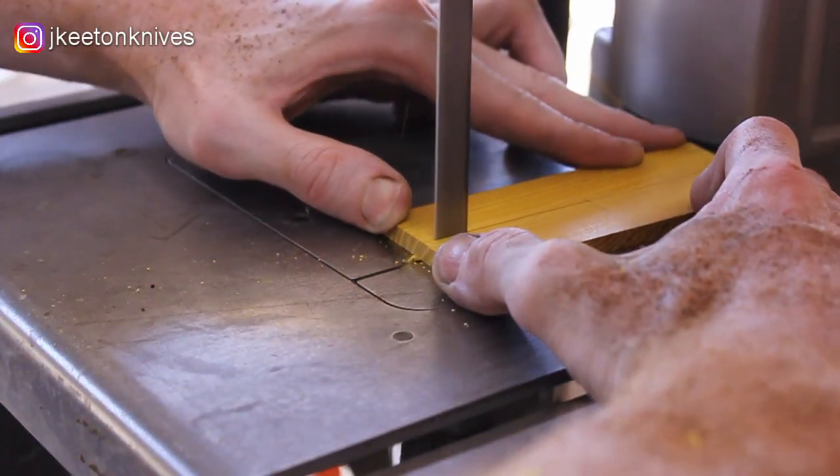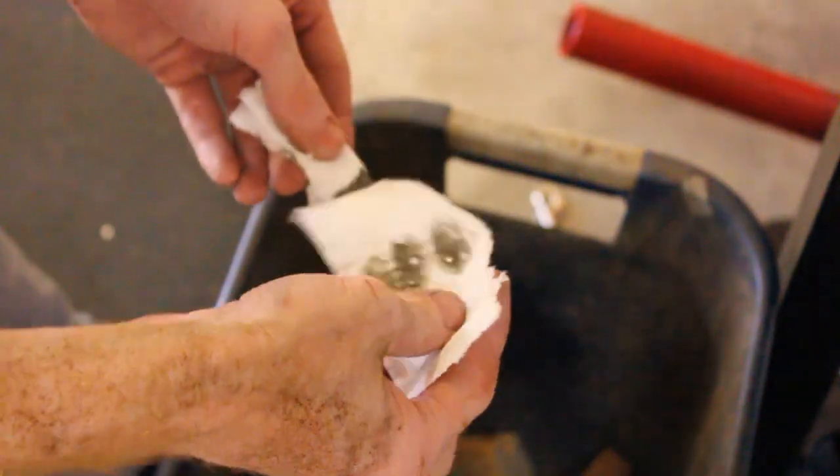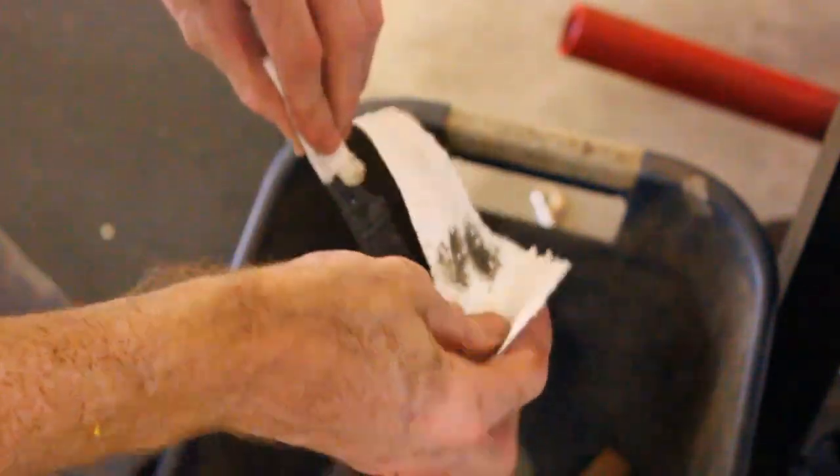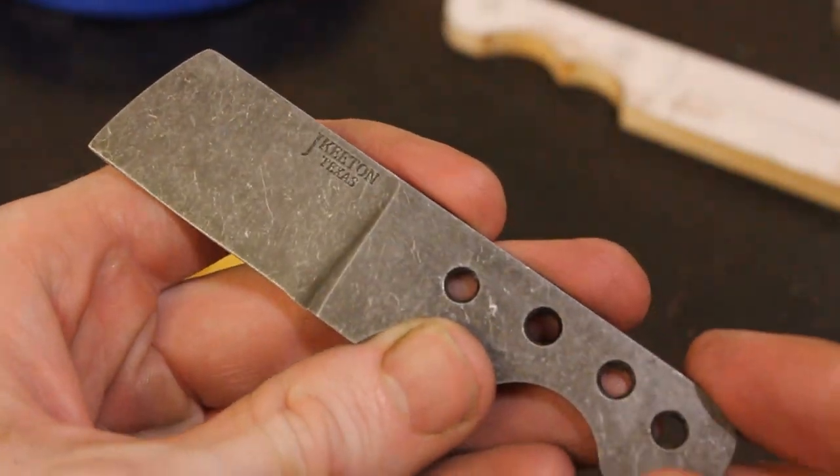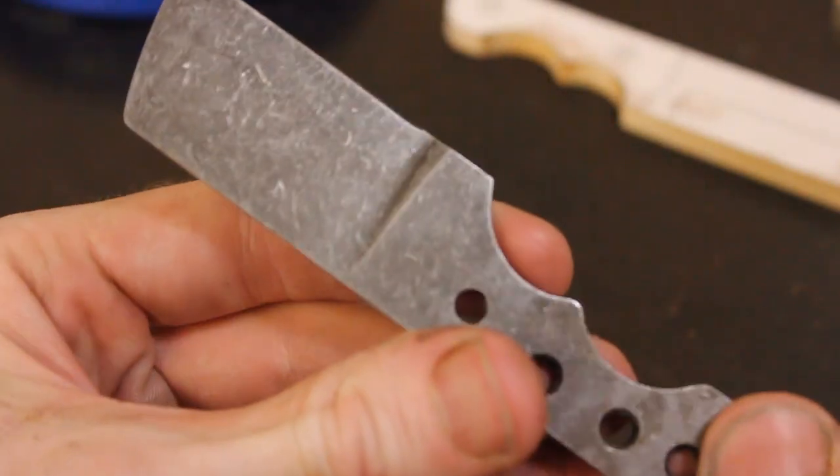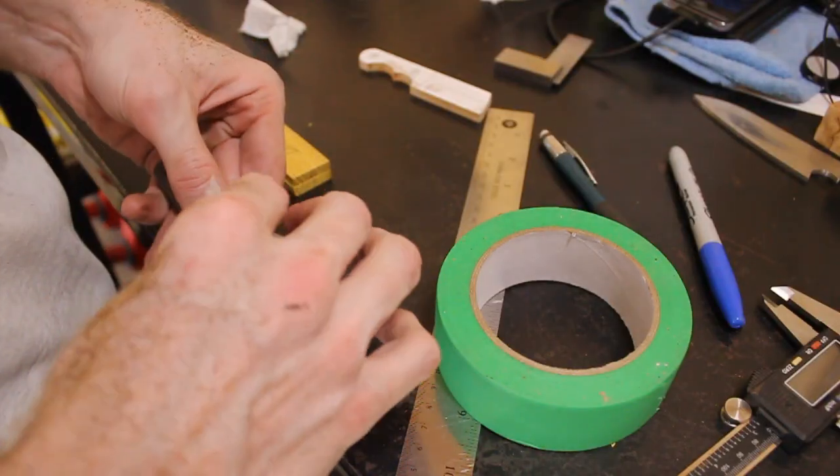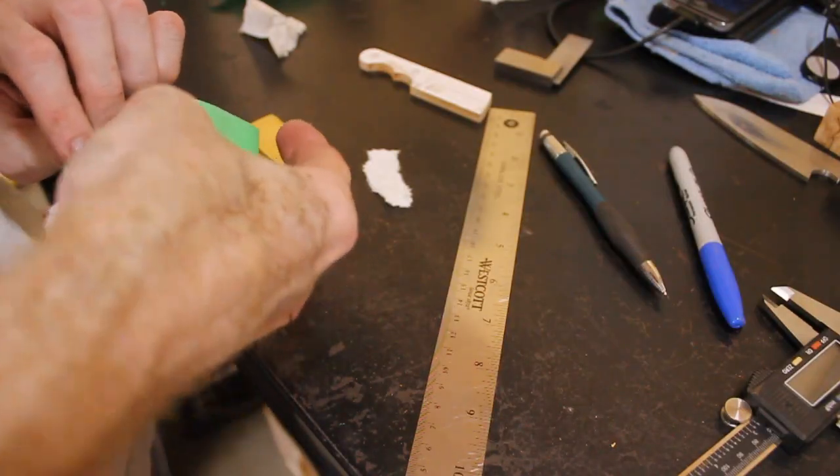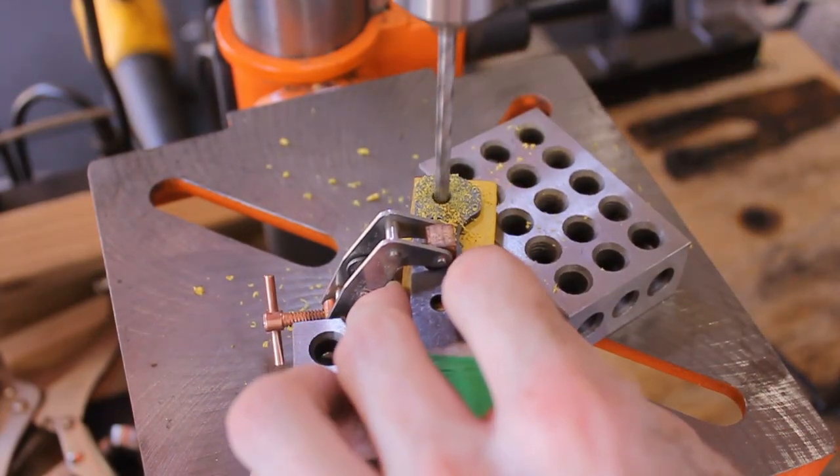The nice thing is with such a small knife, I'll be able to use just one scale and could probably do two knives with this one scale since the handles are so little. This handle design, by the way, is the same handle design from Walter Sorrells' Hawk Feather knife.